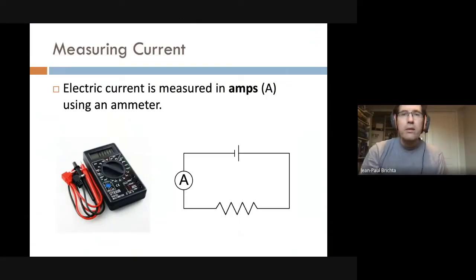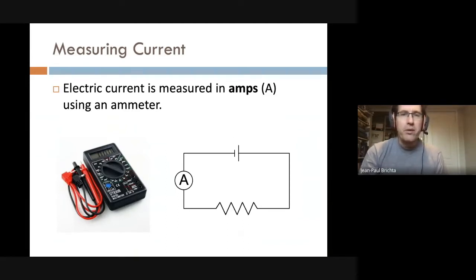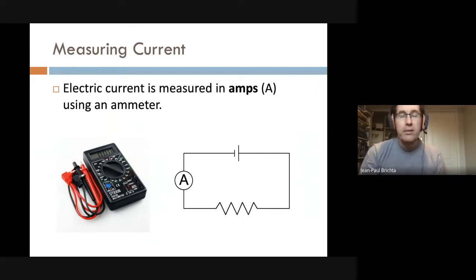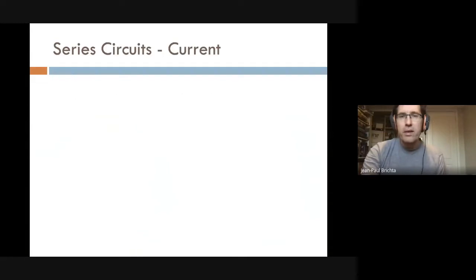When we talk about electric circuits, there are two devices we'll use frequently. The first is used to measure current and is known as an ammeter. Current is measured in amps, and the ammeter must sit in series with the rest of the circuit so that whatever current flows through the circuit also passes through the ammeter.